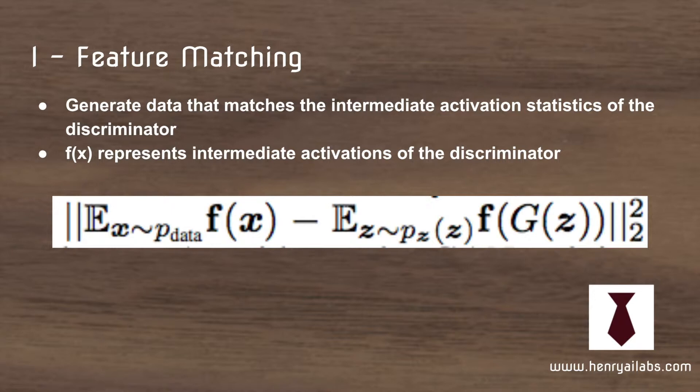The first idea is feature matching. The high-level idea is that when the discriminator processes the images, it passes them through a series of convolutional layers before reaching its decision of real or fake.